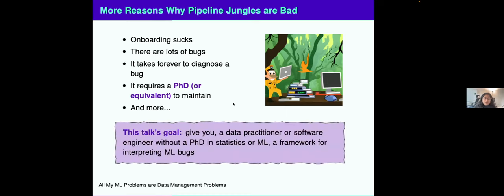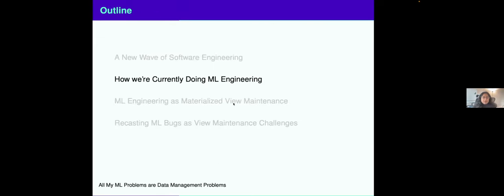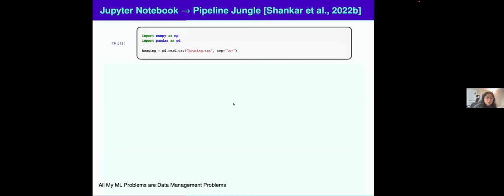The goal of this talk is to give you a data practitioner or software engineer without a PhD in machine learning, someone who's not training machine learning models but you're working on ML-powered software, I want to give you maybe a new different framework for interpreting ML bugs. Spoiler alert, it has to do with materialized views. Before we get into the new view of ML bugs, I want to talk about how we get to pipeline jungles in the first place.